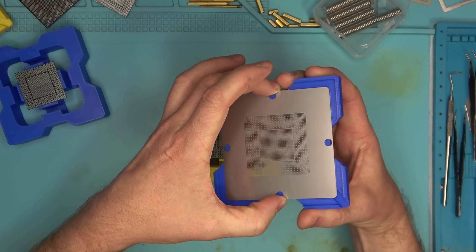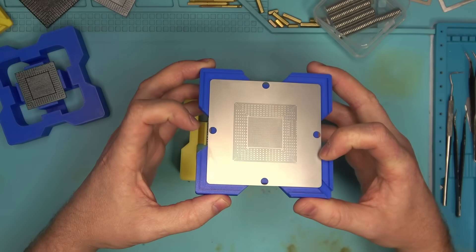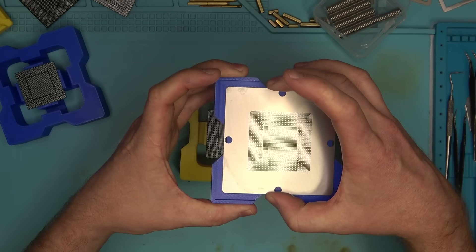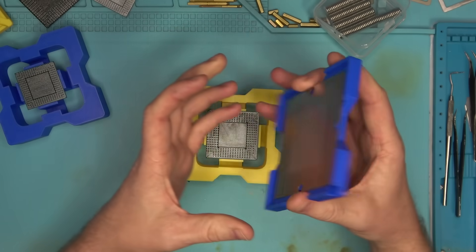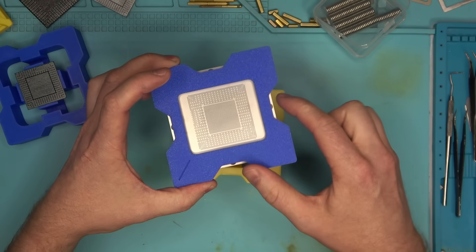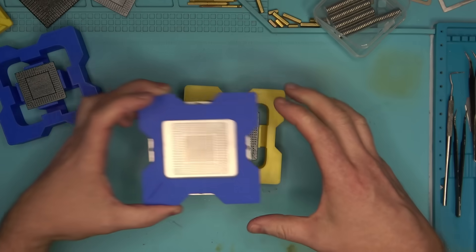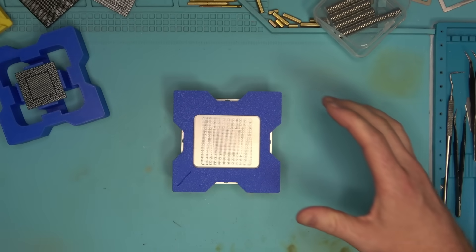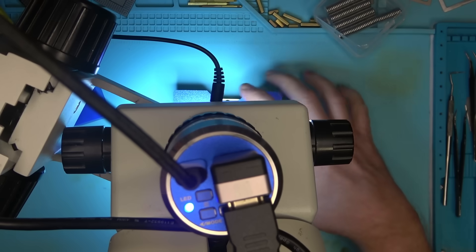So the thought process behind this design was the stencil goes in like this and there's slight, I slightly oversized the cutout for the stencil just so that you can do some micro adjustments. And the micro adjustments is the reason why I have these cutouts here on the sides as well.